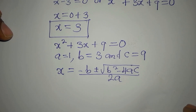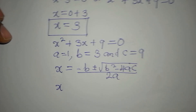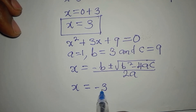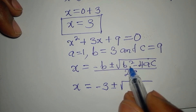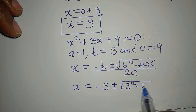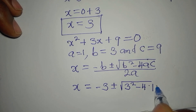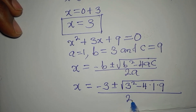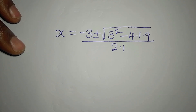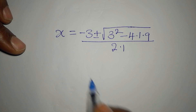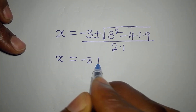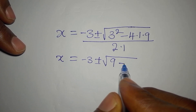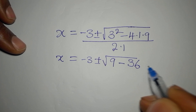Substituting into the formula: x equals minus 3 plus or minus the square root of 3 squared minus 4 times 1 times 9, divided by 2 times 1. That gives us 9 minus 36, which is negative 27, under the square root, divided by 2.